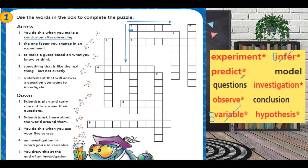Now, number six — to make a guess. Predict. Excellent. Whenever you are making a guess, you can underline with me, because these are the key words. When you make a guess based on what you think or what you know, it's to predict. So predict is number six.